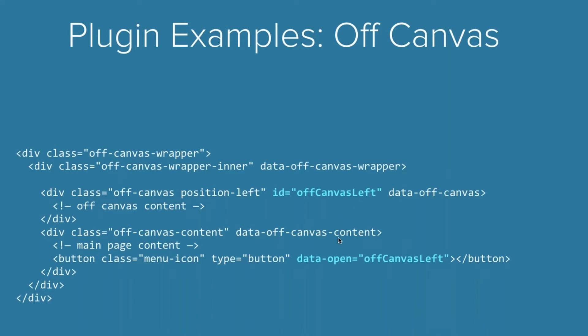The off canvas content is what would traditionally be considered your page — the thing that's going to be either shifted when you open the panel, or overlaid. Like all our other patterns, you'll have something to open or toggle it, and you'll have the ID to show it.